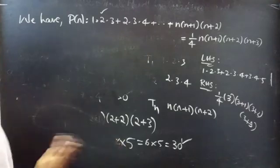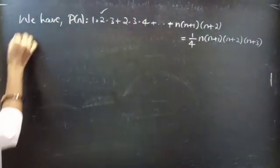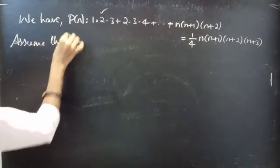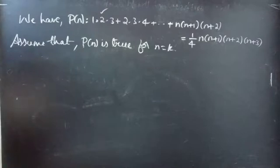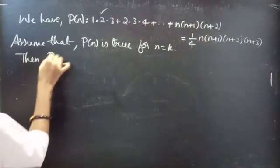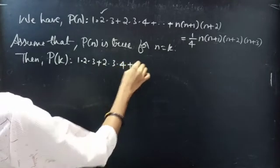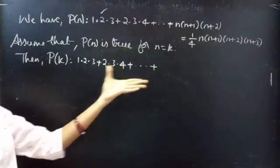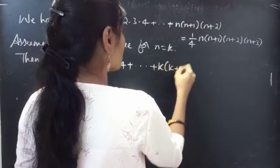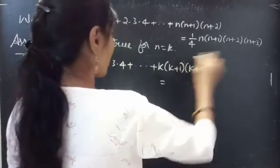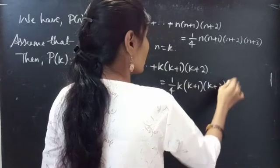Now, we assume the statement is true for n equals k. Assume P(k) is true. Then P(k) states: 1·2·3 + 2·3·4 + ... + k(k+1)(k+2) equals (1/4)·k(k+1)(k+2)(k+3).